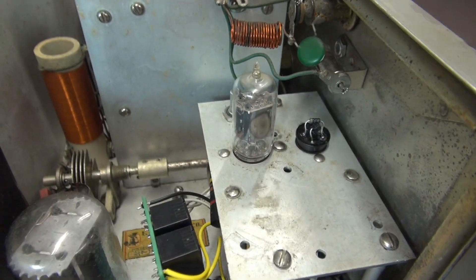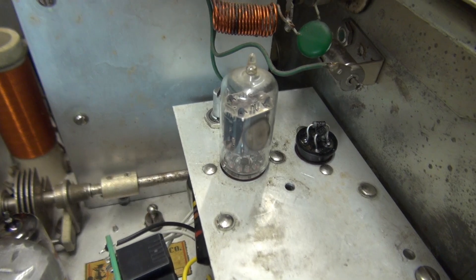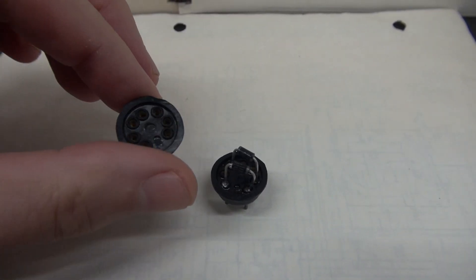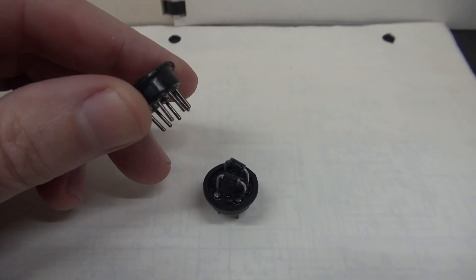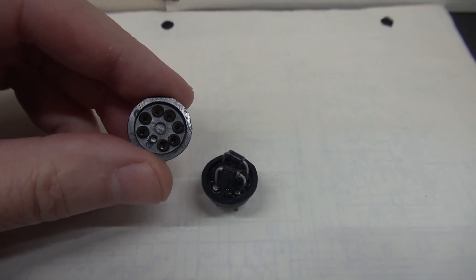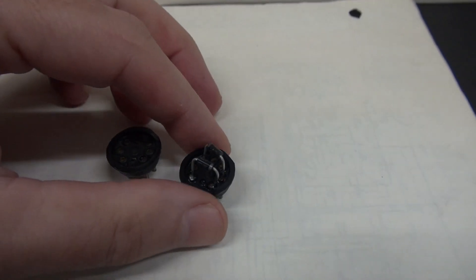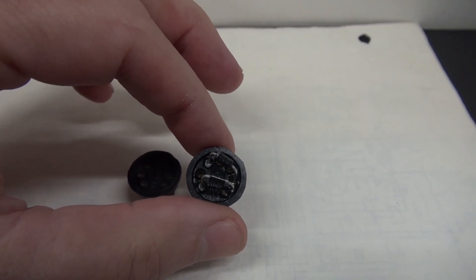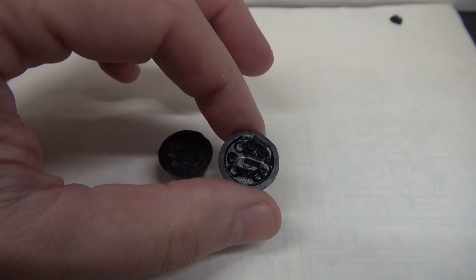They're bakelite, very nice construction, plug right in. Of course, when you receive the base from surplus sales, there are no diodes installed. But there are solder cups. So you bend your leads, you pop them in. In this configuration, I'll attach a schematic here for your review.